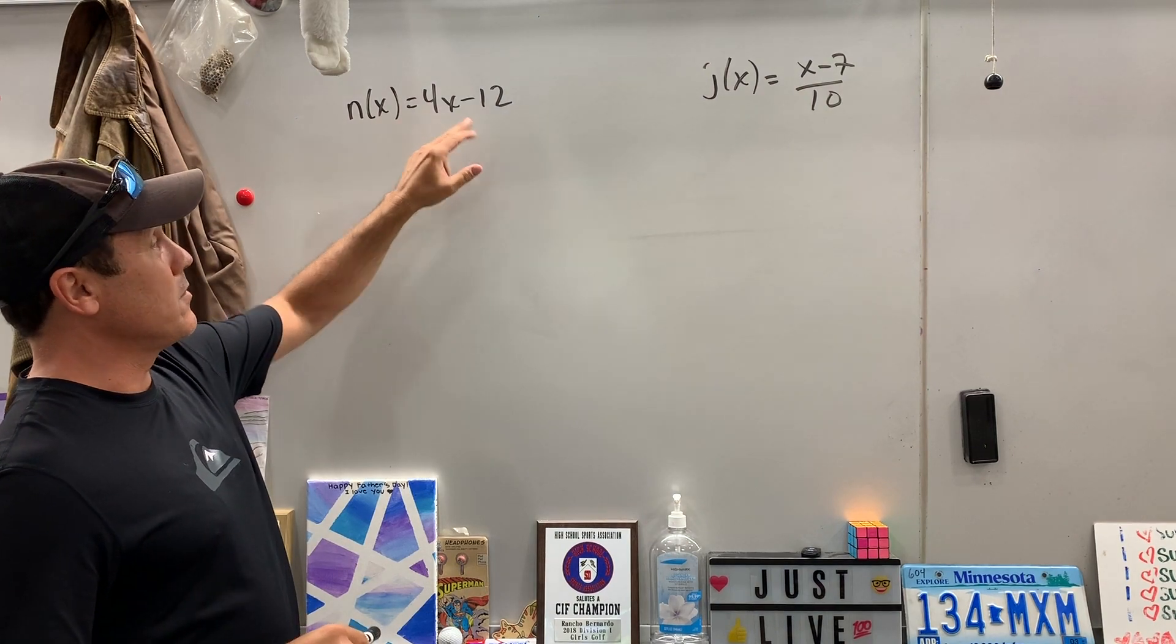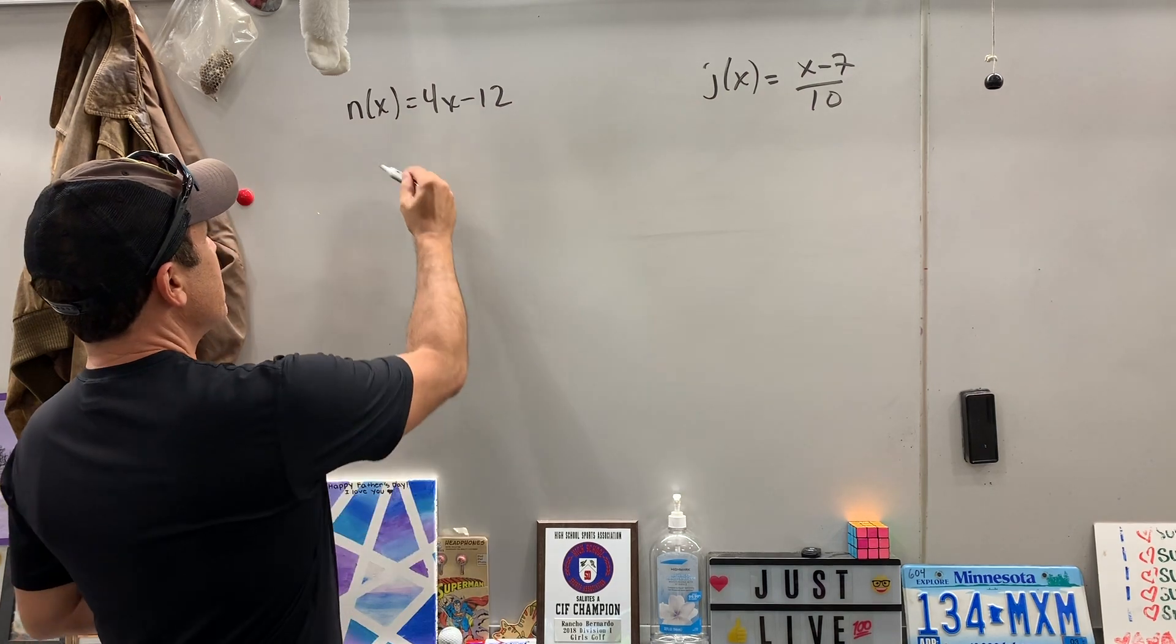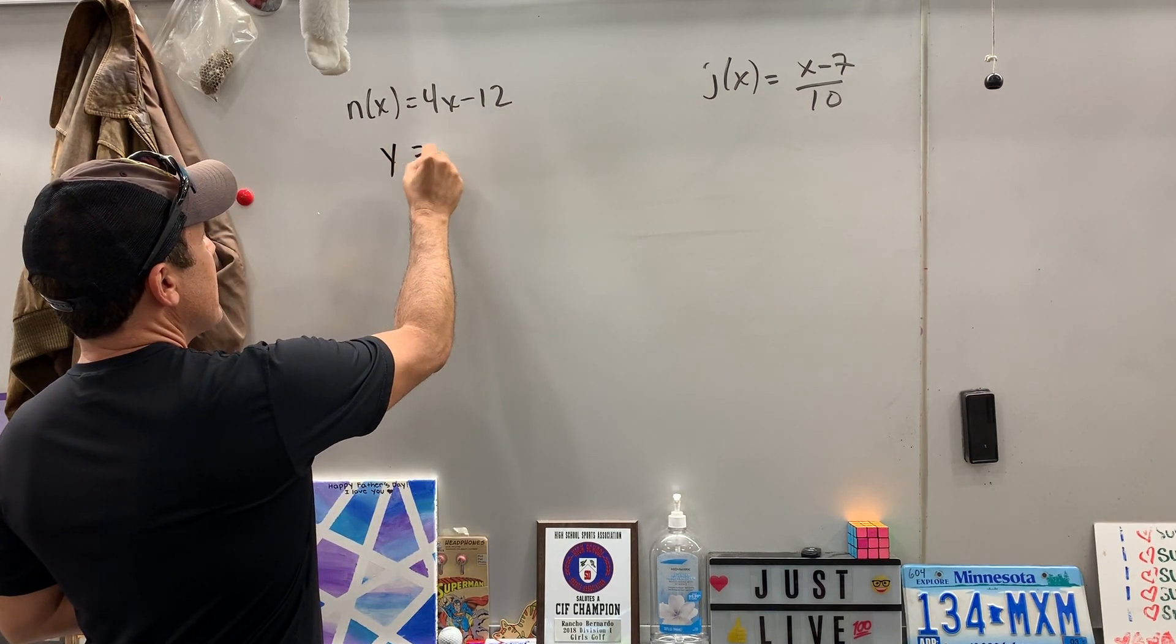This n of x is equal to 4x minus 12. We're going to find the inverse function of that. Okay, the first thing I would do is just change that to a y.